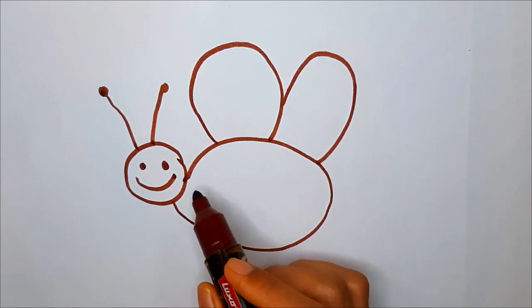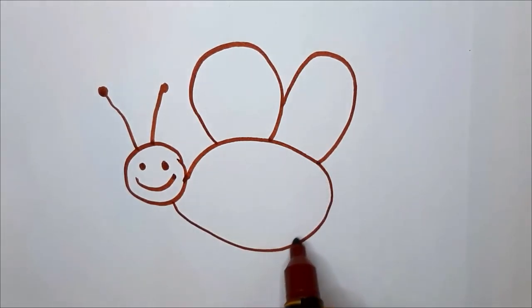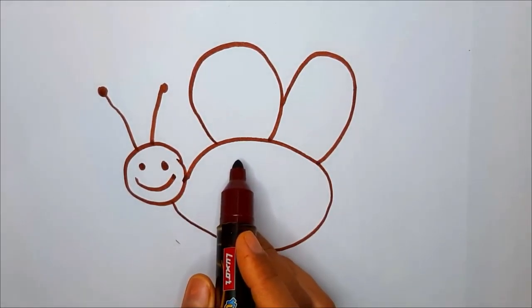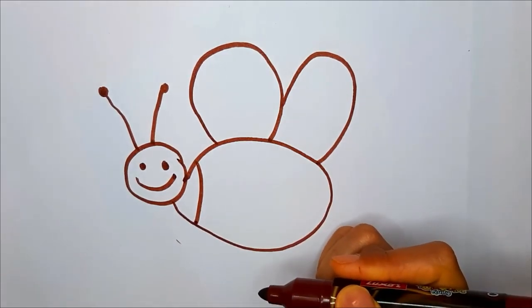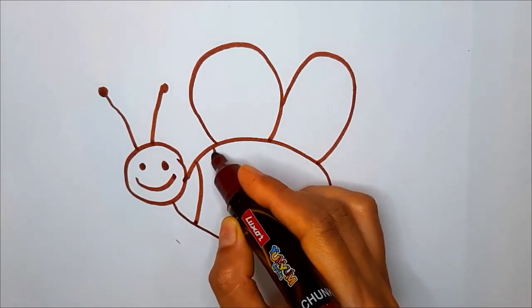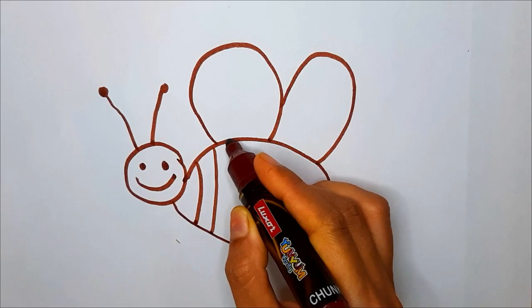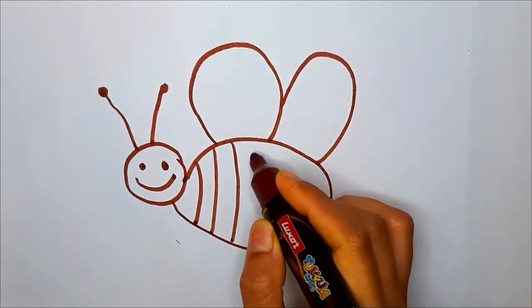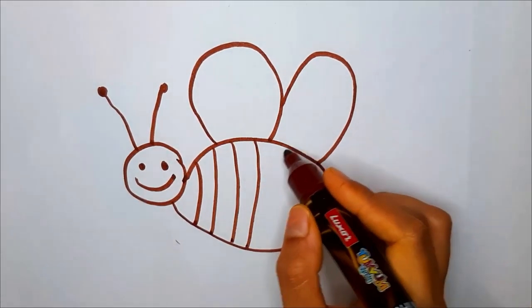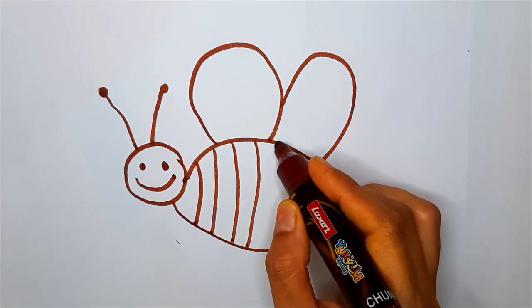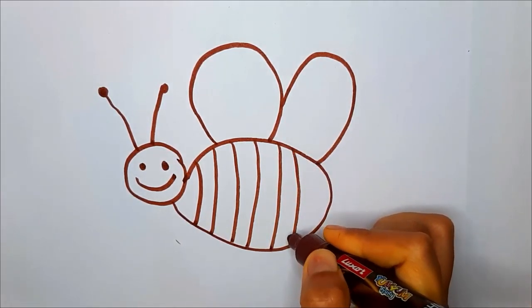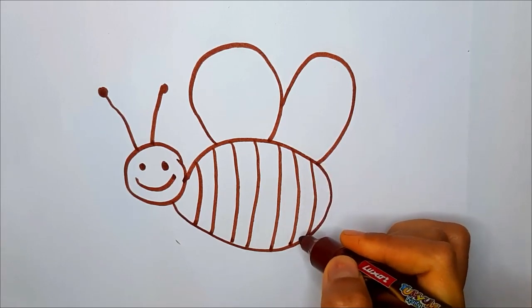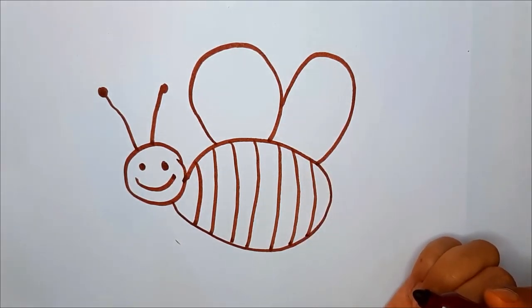So now let's move towards her big tummy. Let's design her tummy. Just draw a few lines like this. You know how to draw lines? Yes, like that. It's okay if these are not straight. You can make it. Just keep drawing. And yes, it's done.